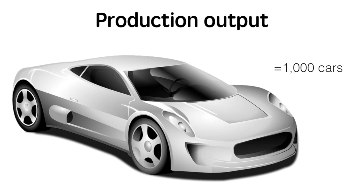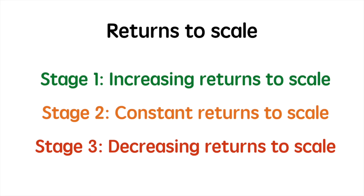Each car image represents 1000 cars. This is the output generated from the previous inputs: 1000 workers, 500 machines and 1 factory. When we discuss returns to scale we look at 3 specific stages: increasing, constant and decreasing returns to scale.